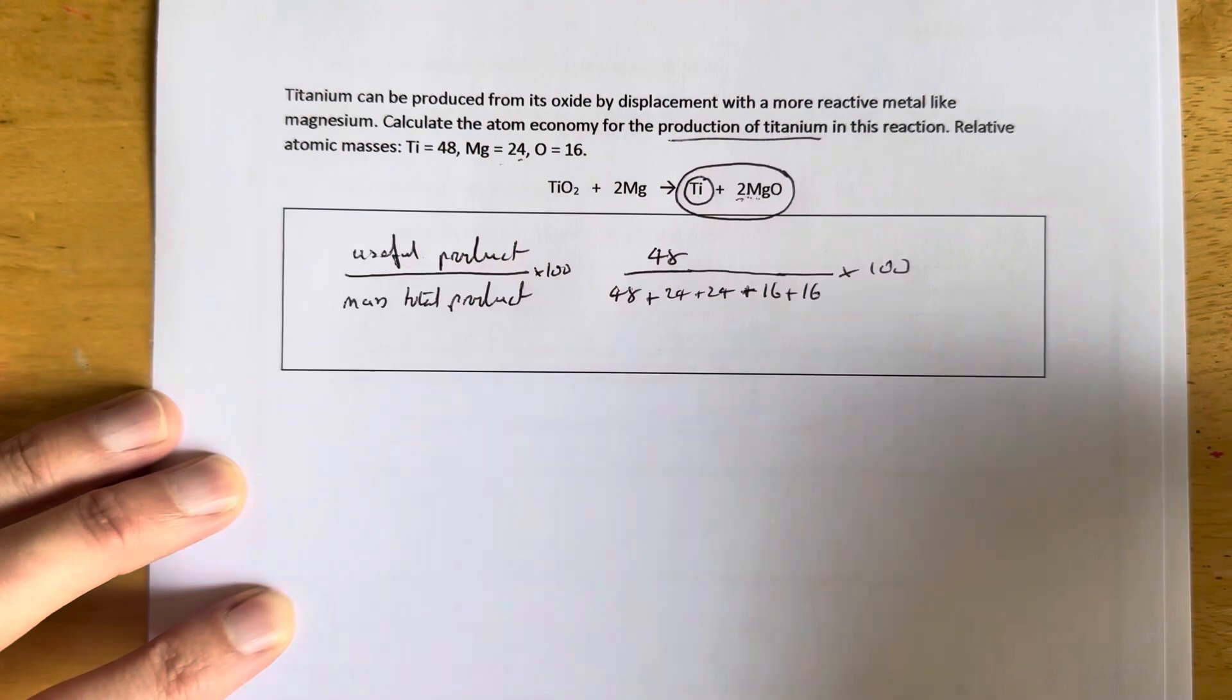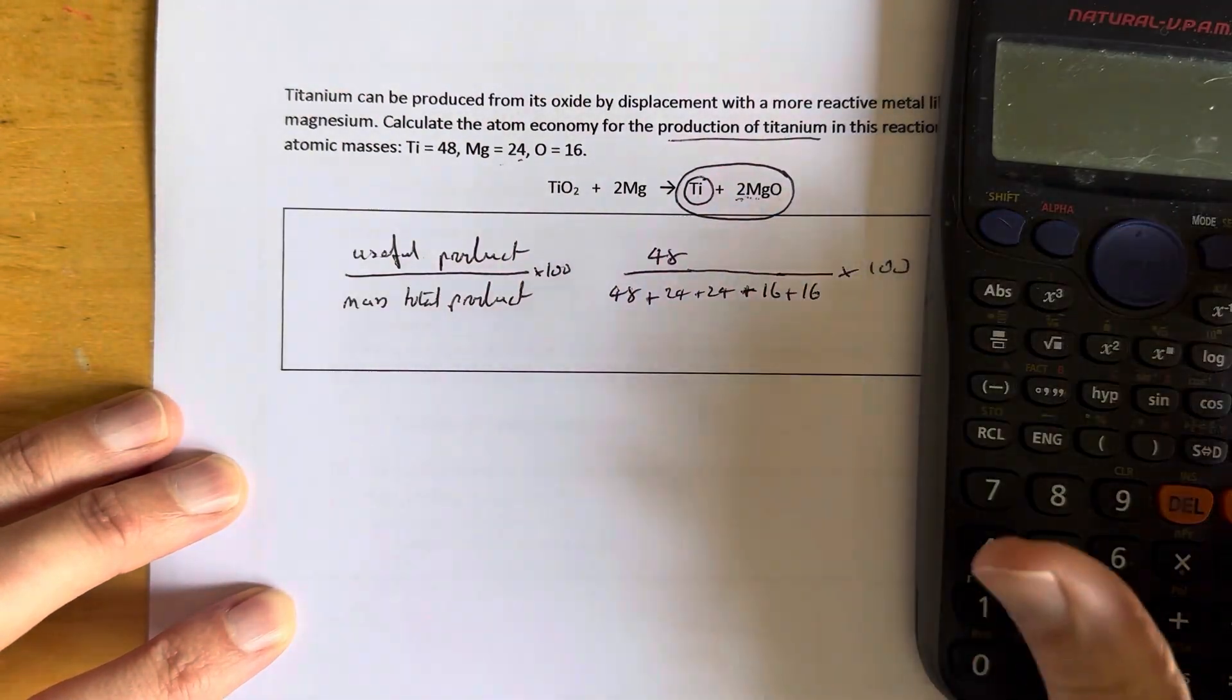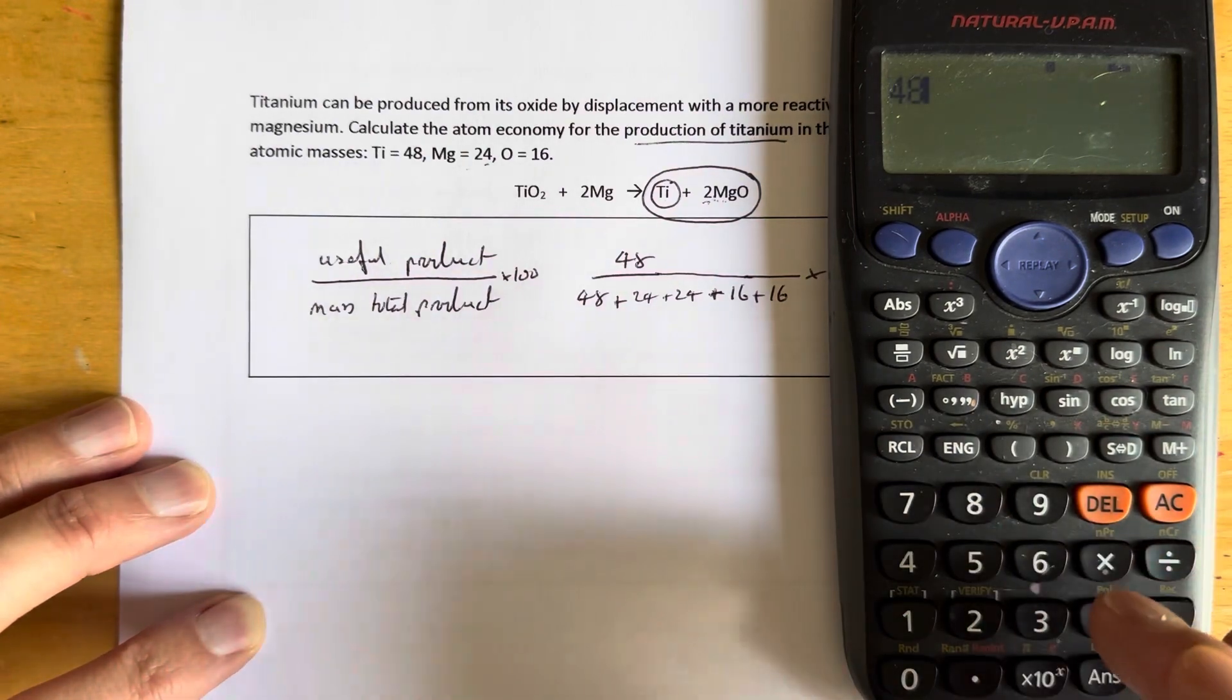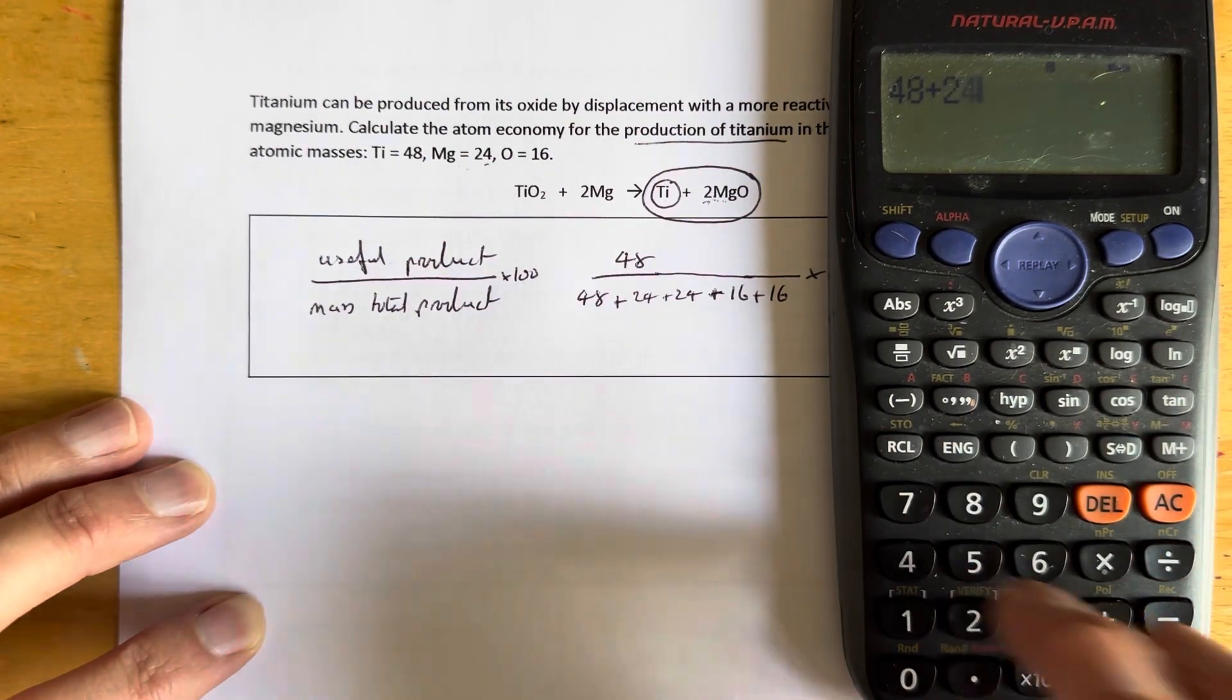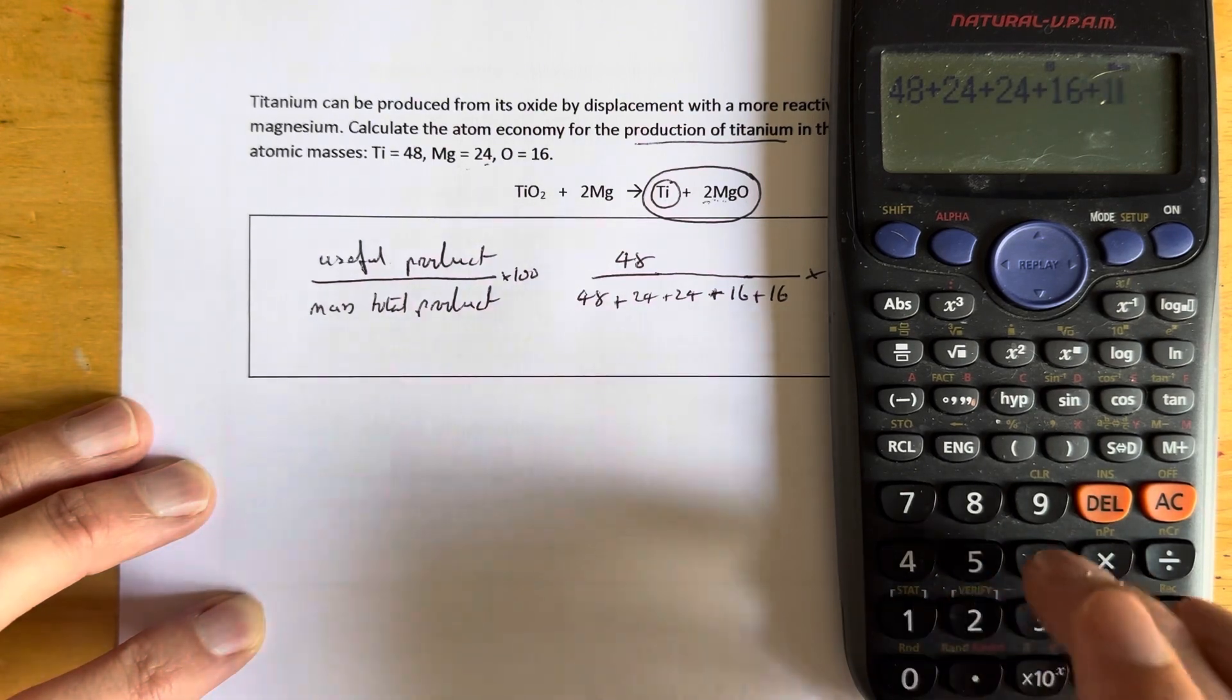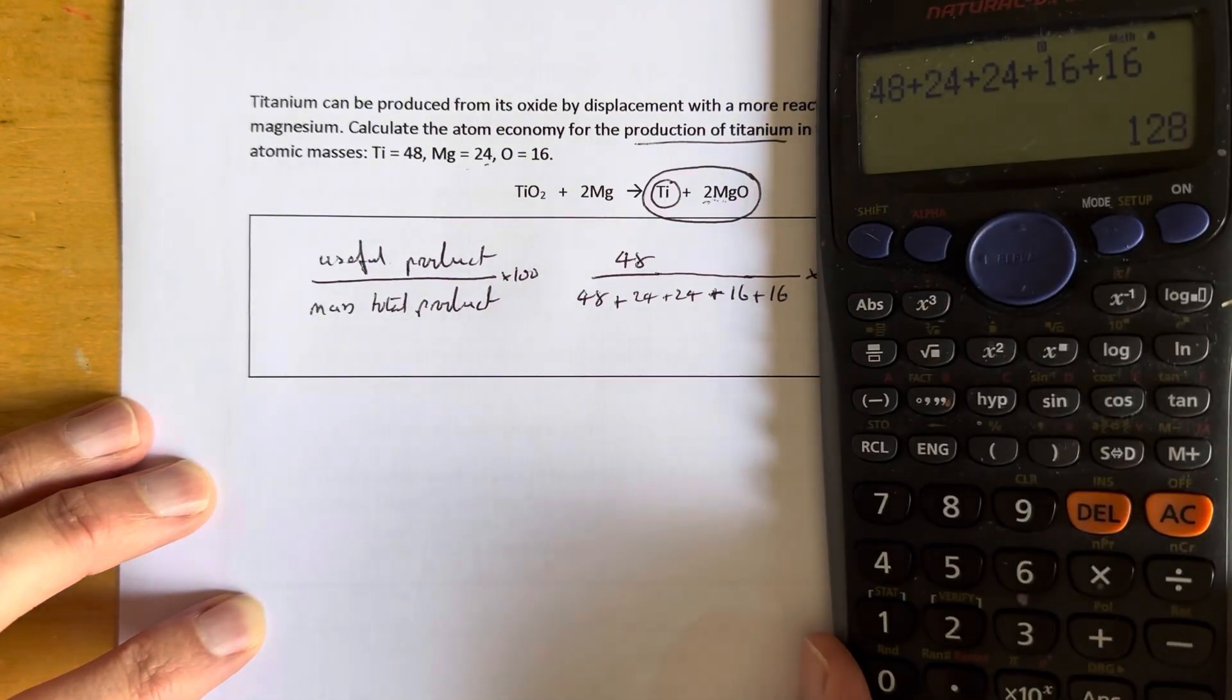I'm just going to work out the bottom first before we do anything. So we've got 48 plus 24 plus 24 plus 16 plus 16 equals 128.